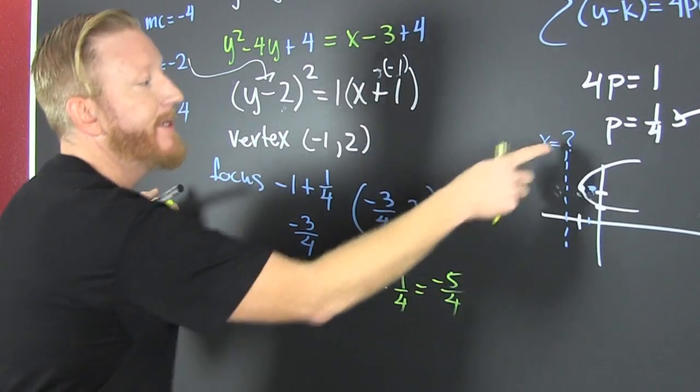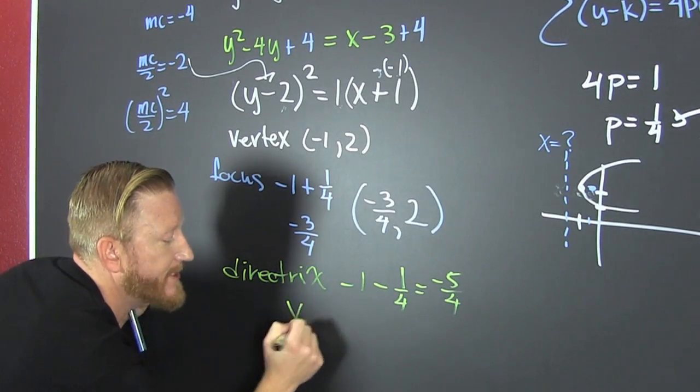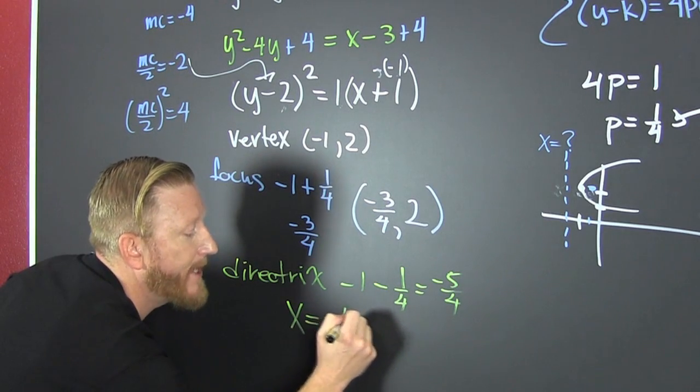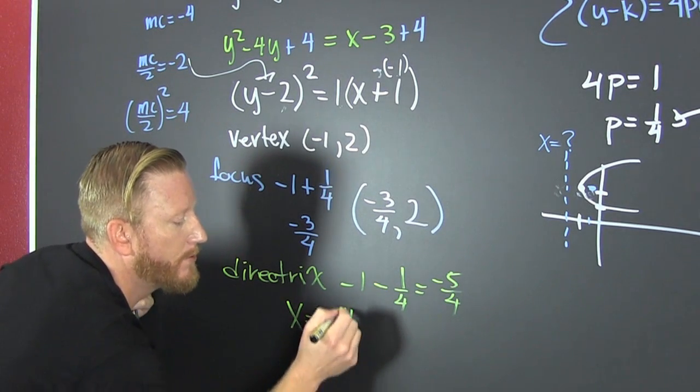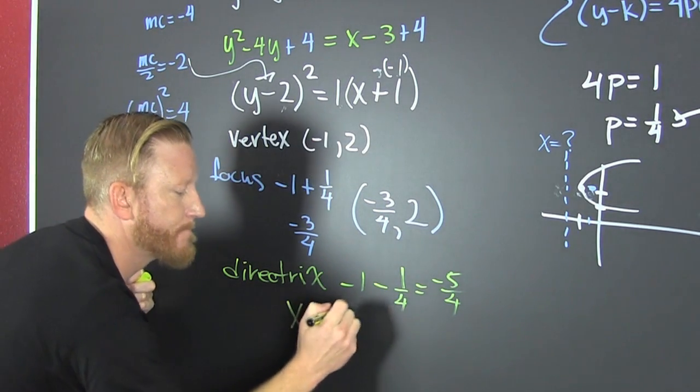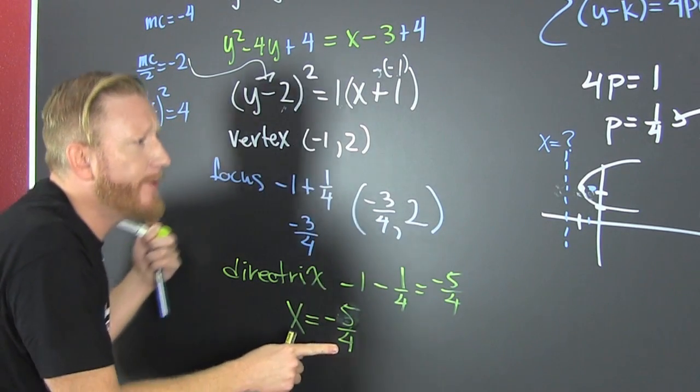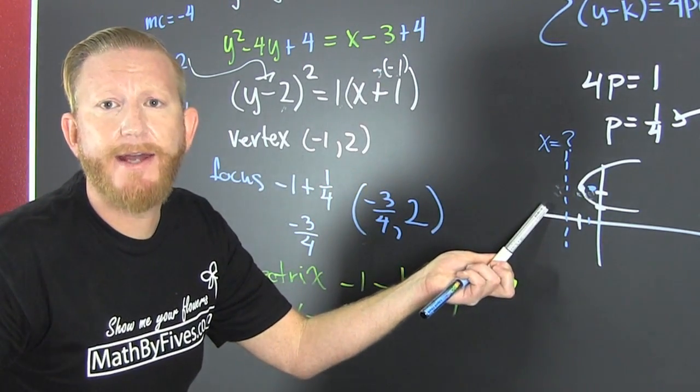So what's that? That's that x. So my directrix is that x is equal to a minus 5 fourths. Minus 5 fourths. And if I was going to draw it, it'd be that.